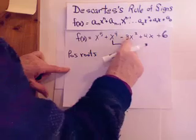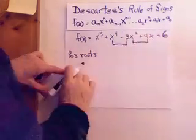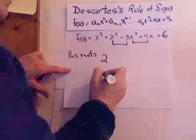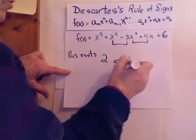There's a change. Minus back to plus. There's a change. Plus to plus. So that means there's a possibility of two positive roots or less than that by two is zero.